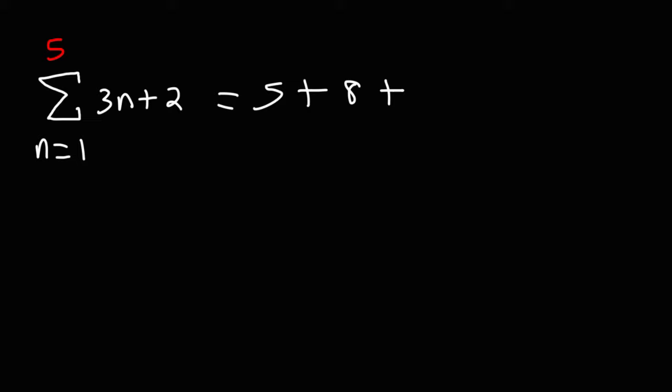At this point, we can see a pattern. What we have is an arithmetic sequence with a common difference of 3 because the numbers increase by 3. When n is 5, the value of 3n plus 2 will be 17. So we just need to add these 5 numbers: 5 plus 8 plus 11 plus 14 plus 17. This is equal to 55.